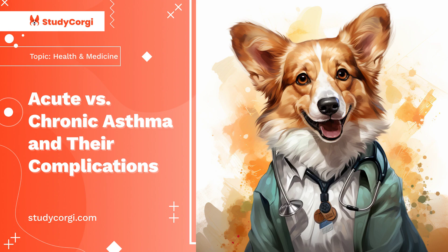The choice of medication depends on the severity of the condition, patient's age, and comorbidities. The first line of medications is called rescue drugs, meant for short-term relief of symptoms. They include short-acting beta-2 agonists, ipratropium bromide inhaler, and oral corticosteroids. Long-term medications are used to prevent attacks and they include leukotriene modifiers, inhaled corticosteroids, theophylline, and long-acting beta-agonists.